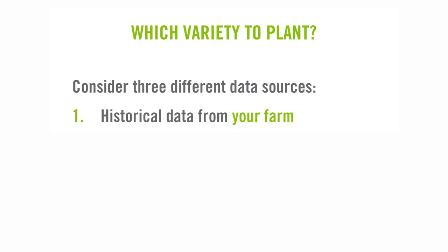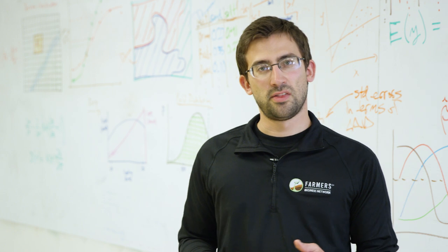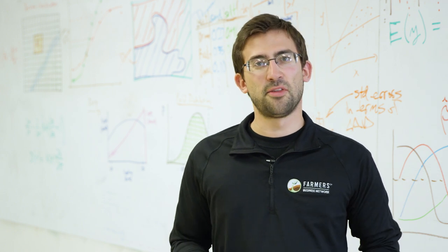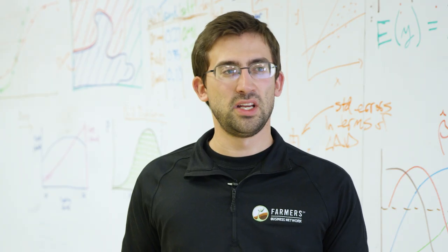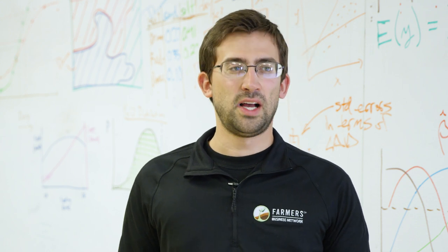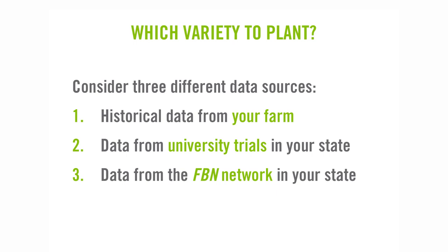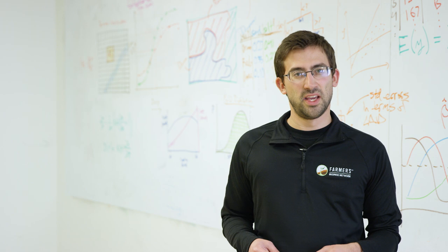The first is looking at historical data from their own farm — basically looking at varieties planted in the past and seeing how they performed. Another way is to look at university trial data, where universities run experiments to see how varieties perform on research plots. The third data set is FBN data from other real-world farmers, aggregating their precision yield data and precision planting data to identify how different varieties performed in different conditions.